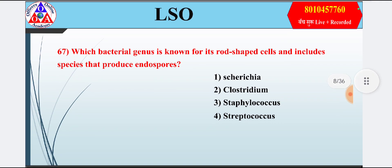Question 7: Which bacterial genus is known for its rod-shaped cells and includes species that produce endospores? Option 1: Bacillus; option 2: Clostridium; option 3: Staphylococcus; option 4: Streptococcus. Answer is option 2 — Clostridium.